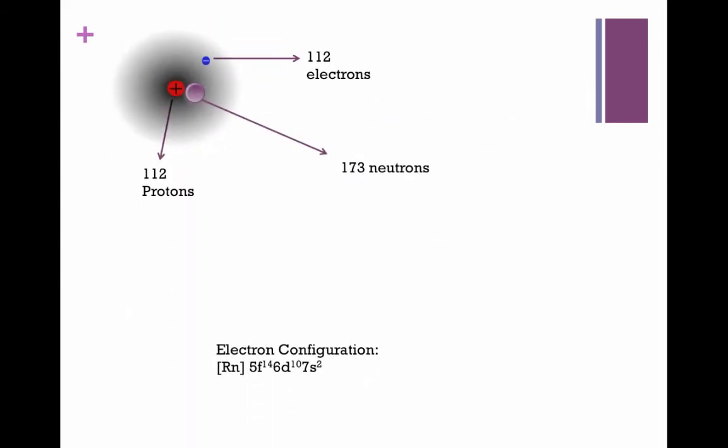The atomic number of Copernicium is 112. This means that there are 112 protons, 112 electrons, and 173 neutrons.